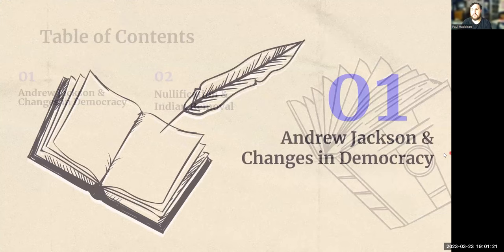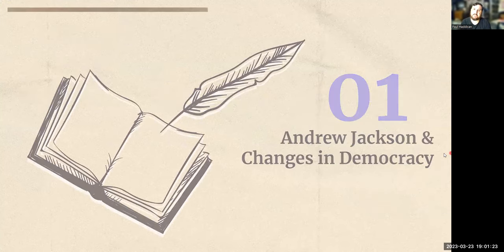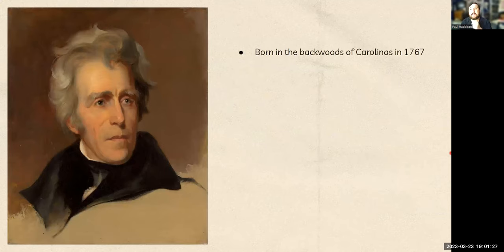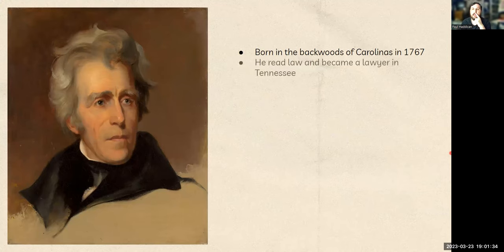Starting off with Andrew Jackson and Changes in Democracy — this is Andrew Jackson right here. He's born in the backwoods of Carolina in 1767. He's a real country boy, on the frontier kind of at this time, and he's going to eventually move up as he gets older.